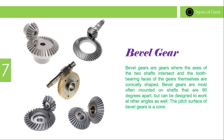Bevel gear: Bevel gears are gears where the axes of the two shafts intersect and the tooth-bearing faces of the gears themselves are conically shaped. Bevel gears are most often mounted on shafts that are 90 degrees apart, but can be designed to work at other angles as well. The pitch surface of bevel gears is a cone.